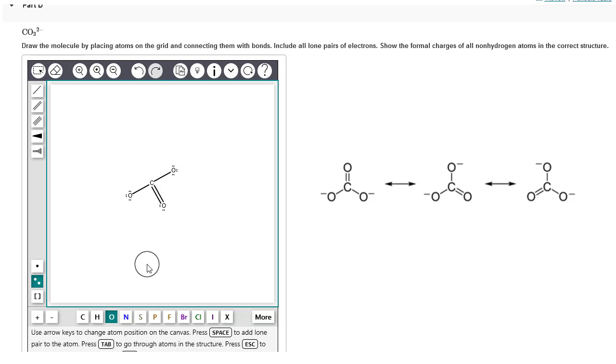The last thing we need to do is add the formal charges. Each of the single bonded oxygens should have a negative charge. We're going to click on this decrease charge button, and click on each of the single bonded oxygens to add the negative charge.